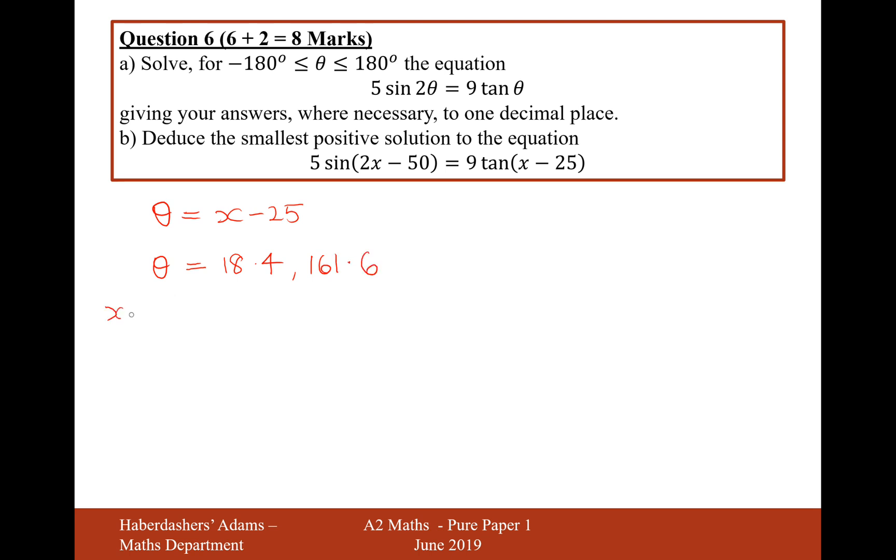So we can see here that if we were to write x minus 25 equals, let's say, 18.4, then we would need to add the 25 onto the other side. So let's go back to that exact value of 18.4 on the calculator and add 25. That would give us 43.4. So there we are. So that's the smallest positive thing.